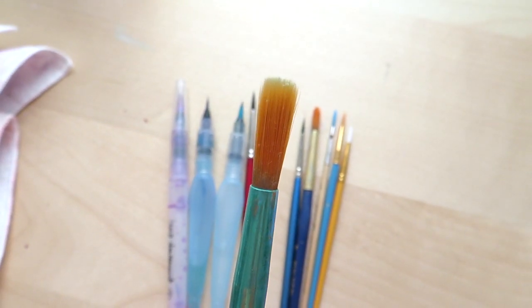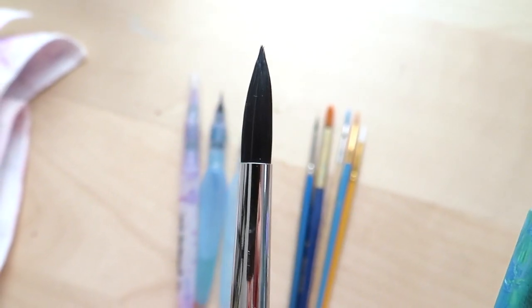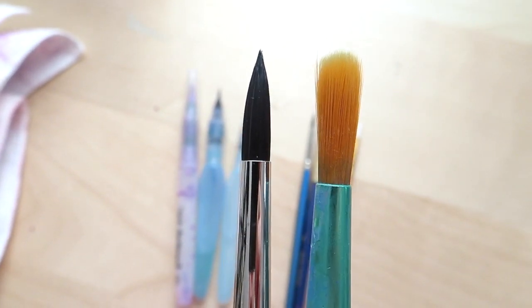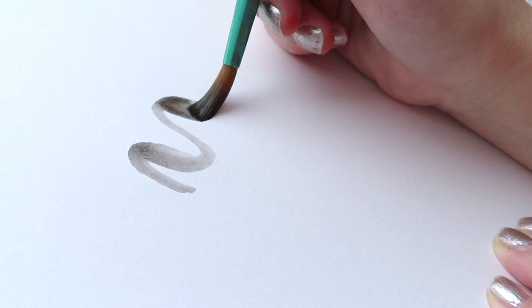One last tip: make sure your brush doesn't look like this, flat at the top. Make sure it comes to a nice sharp tip like this one. This way you can ensure those thin up strokes.